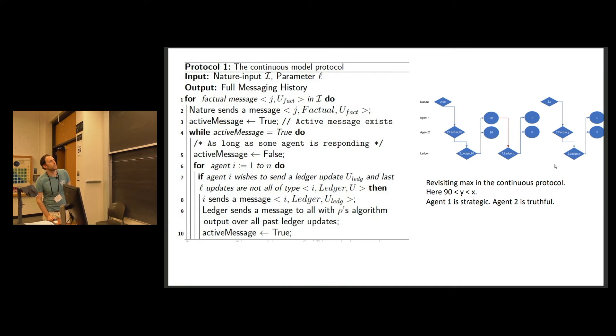So here I really hope you can see the graph over there. So I would go over it quickly. This is just an example where we are running the protocol for the algorithm of max, for max computation. And what happens here is nature sends the number 90 to agent two. Agent two is truthful. So it sends the number 90 to the ledger, the central authority. And immediately the central authority updates both agents with the number 90, which is the current max. And now agent one decides to attack in some way and sends the number X to the central authority.